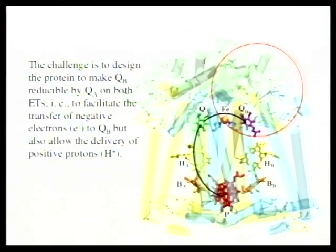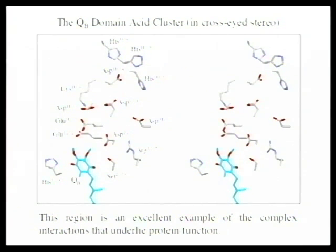So all of this activity, this design activity, if you like, takes place in this region, which I call the QB acidic cluster, because it turns out there are an enormous number of acidic residues here. This has the highest density of ionizable residues known in any protein that's so far been identified. So here is the secondary quinone down here. If you're able to do cross-eyed stereo, that's what this figure is. If you can't, don't worry, it's probably not very important. And I've only labeled one side anyway, which means if you can do it, you kind of get a headache after a few minutes.